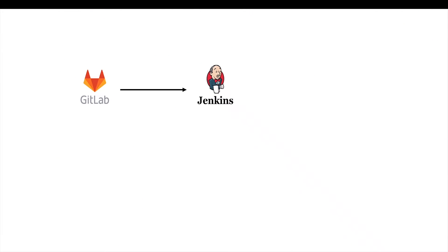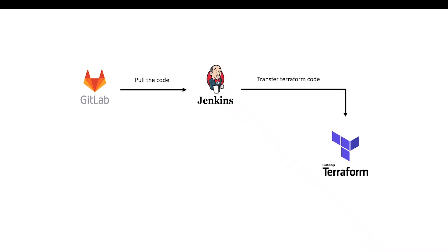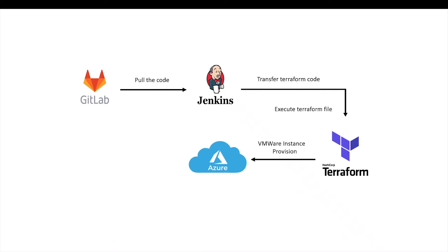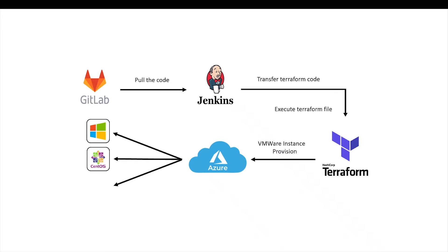In the first stage, Jenkins' job will pull the Microsoft Azure Instance Provisioning Terraform code from GitLab. In the next stage, Jenkins will transfer the Terraform code to the Terraform machine, which has instructions to provision Microsoft Azure instances, disk, network, and IP addresses. In the final stage, Jenkins will apply the Terraform code on the Terraform machine, which will provision CentOS Instance, Ubuntu Instance, and Windows Instance. Finally, all three Microsoft Azure instances will be provisioned in Microsoft Azure.